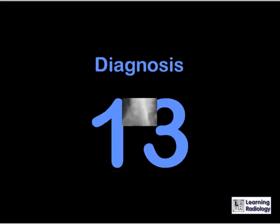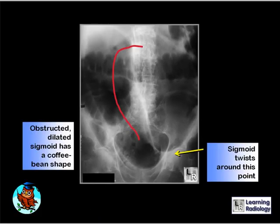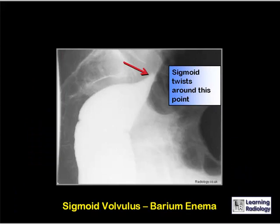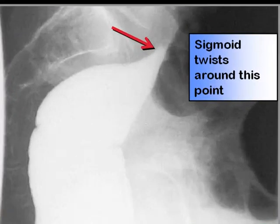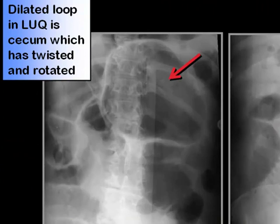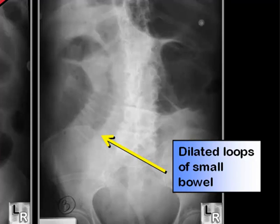Why is the abdomen of this 83-year-old man distended? There is a very large dilated obstructed loop of large bowel with the shape of a coffee bean, representing a sigmoid volvulus — the sigmoid has volvulated around a central point. A barium enema would be obstructed at the point of twisting. A cecal volvulus is less common: the cecum rotates into the left upper quadrant, and there are also multiple dilated loops of small bowel because the cecal volvulus produces a proximal small bowel obstruction.